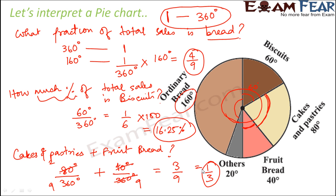So you see, just looking at a pie chart, you can interpret a lot of things. This is basically a graph. Now you understand how a pie chart acts as a graph — it gives us similar information that a bar graph or a line graph gives. That's all about the pie chart.